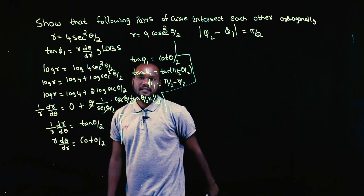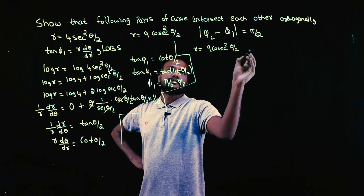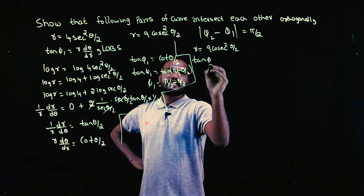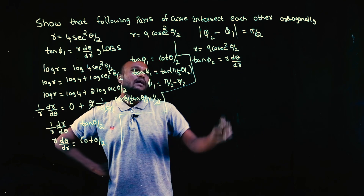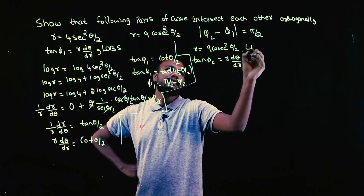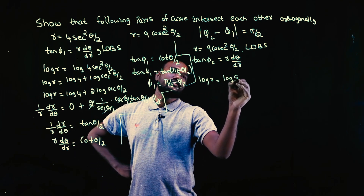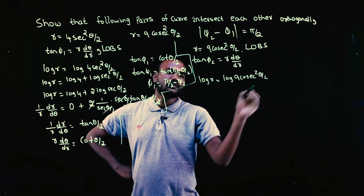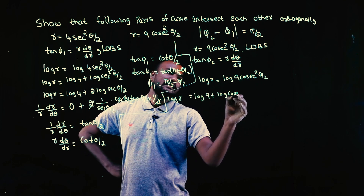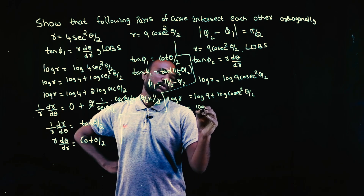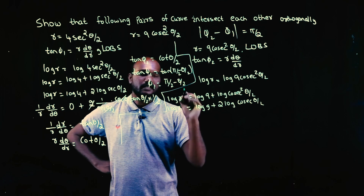Now let's go to the second curve: r = 9 cosec²(θ/2). We need to find φ₂, so we need tan φ₂ = r dθ/dr. r is directly given, but cosecant square makes the question complicated, so again log will make it simple. Taking logarithm: log r = log(9 cosec²(θ/2)) = log 9 + 2 log cosec(θ/2).